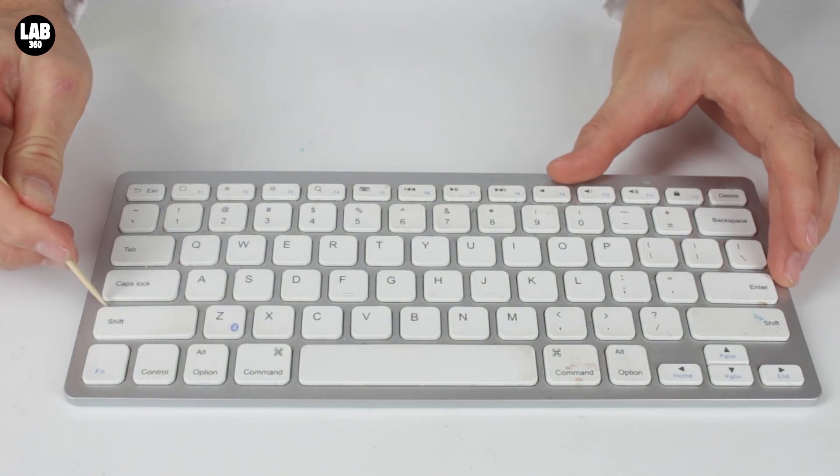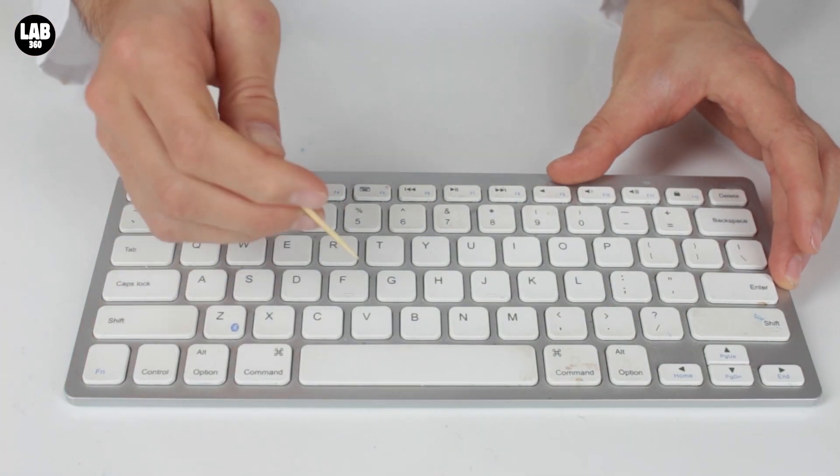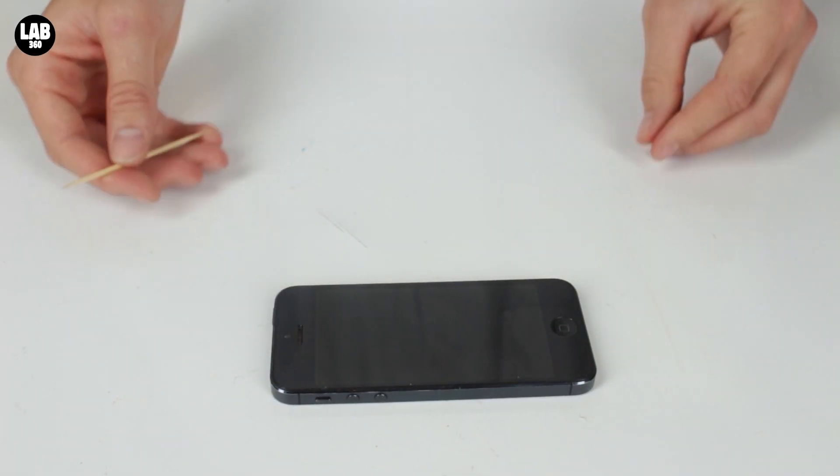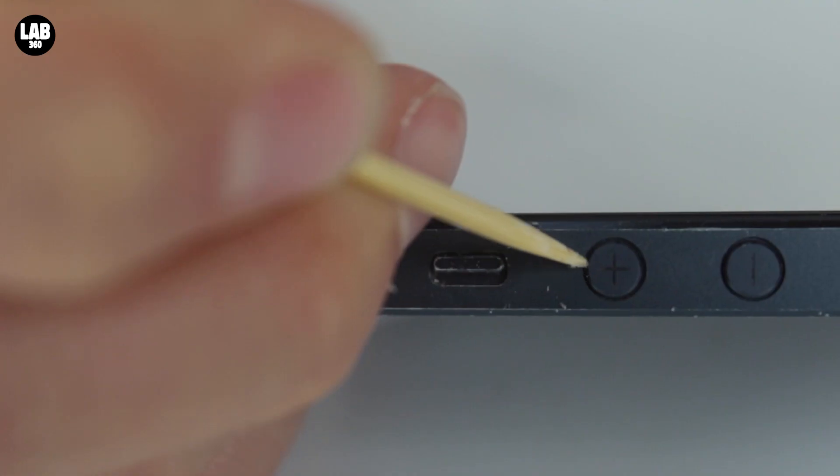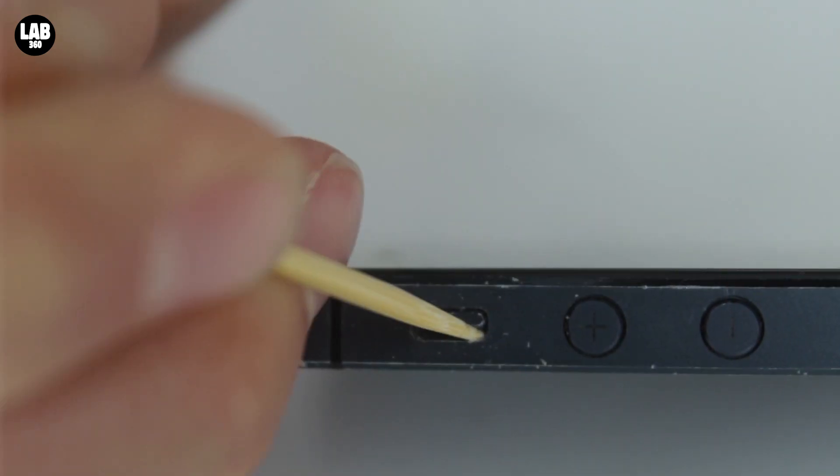Number three. The cleaning toothpick. Toothpicks have a very fine point which can help you to clean very small areas like this keyboard or on this mobile phone.